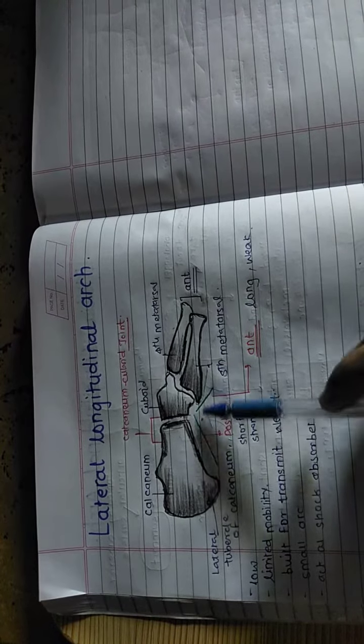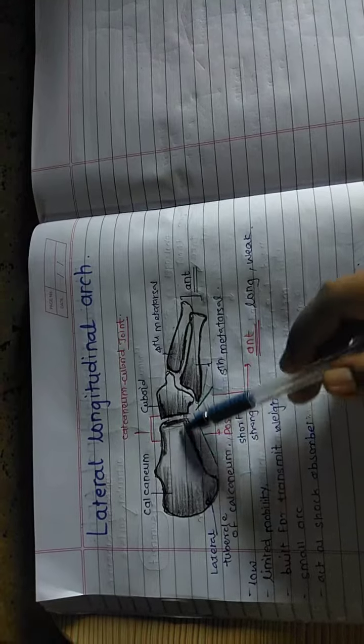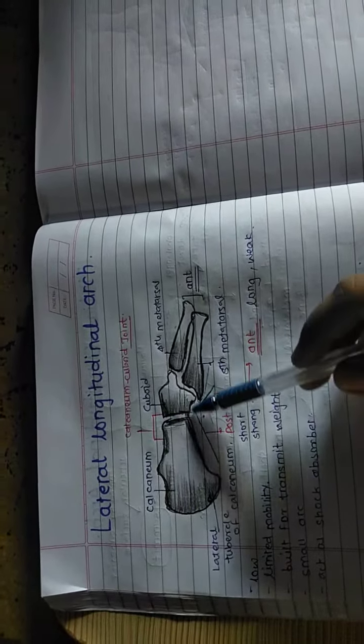In the formation of the lateral longitudinal arch, there is the most involved in the lateral part of the calcaneum bone.